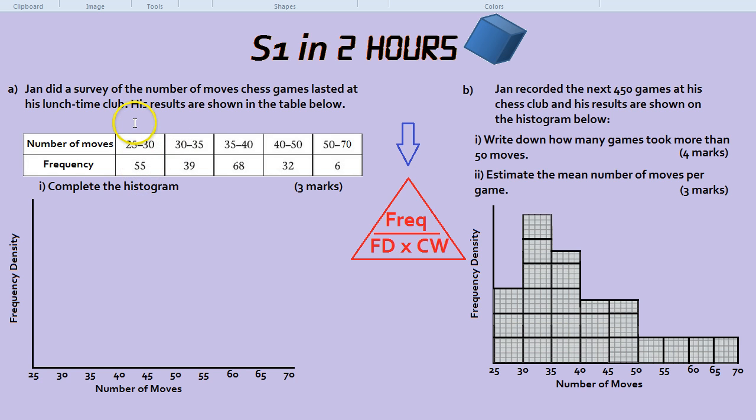55 divided by 5 would be 11. 39 divided by 5 would be 7.8, I think. 68 divided by 5, 13.6. Obviously, you can do these on a calculator in a real exam. 32 divided by 10 would be 3.2, and 6 divided by 20 would be 0.3.